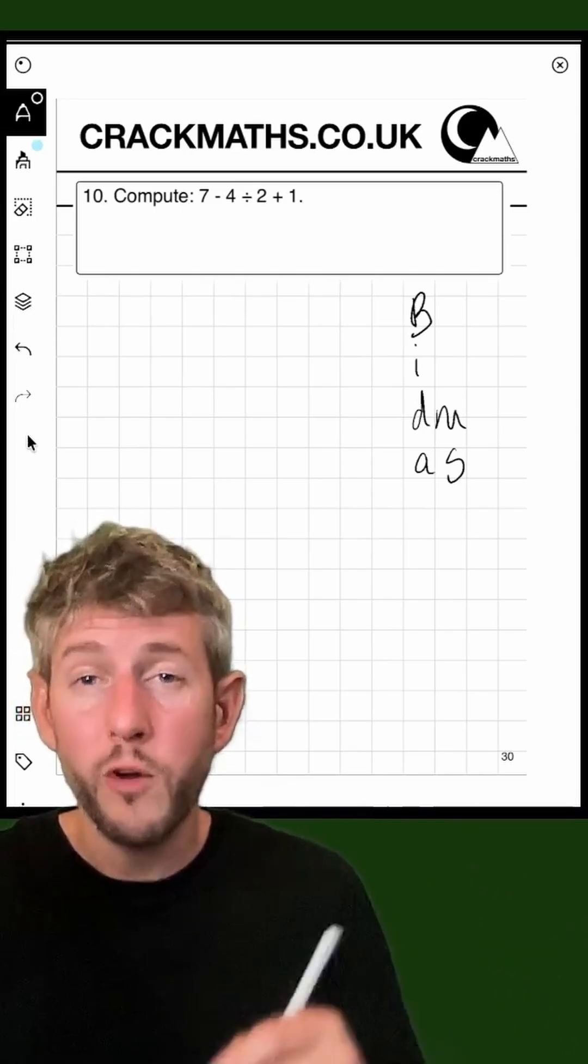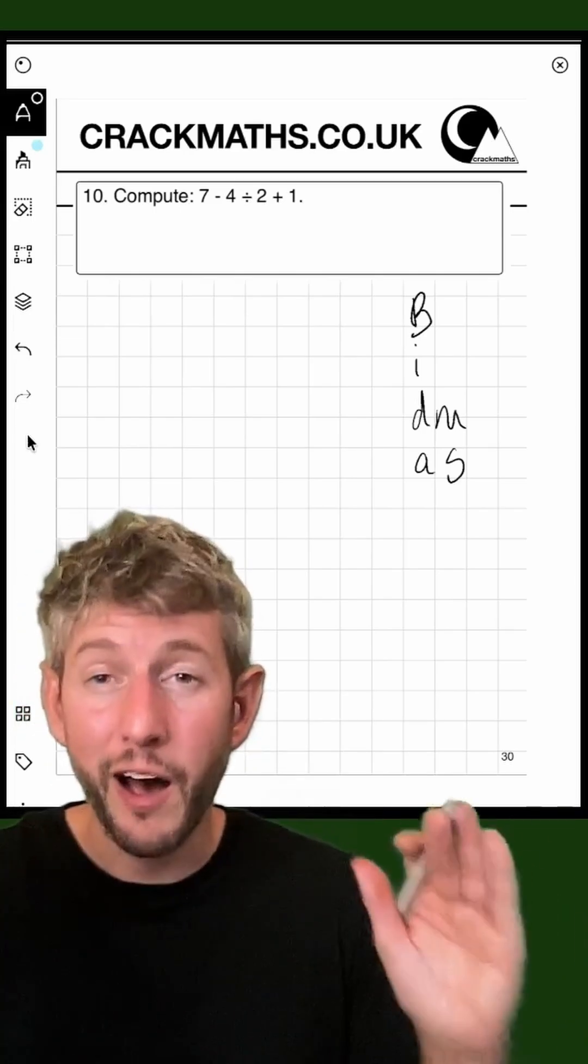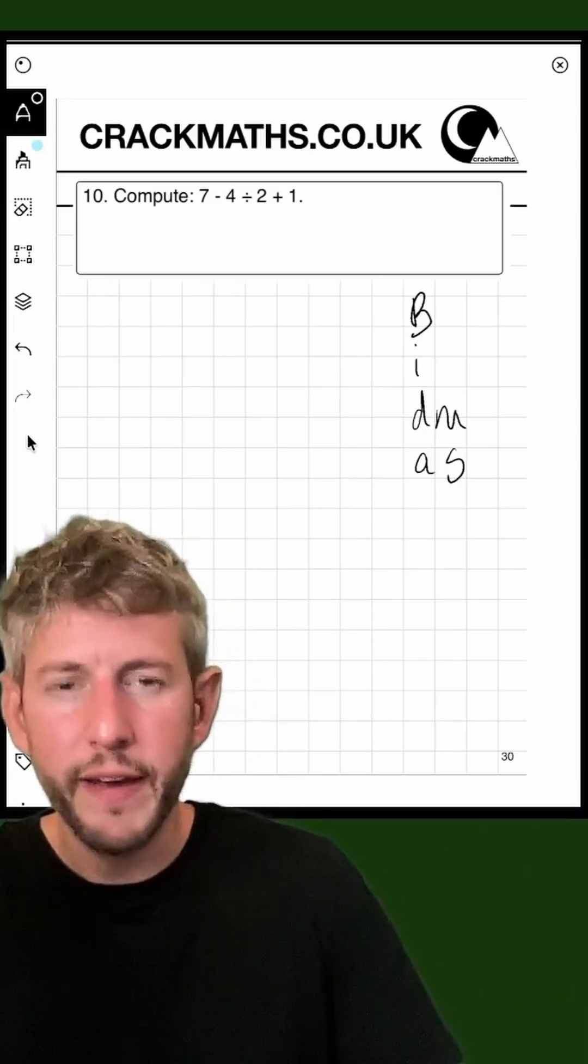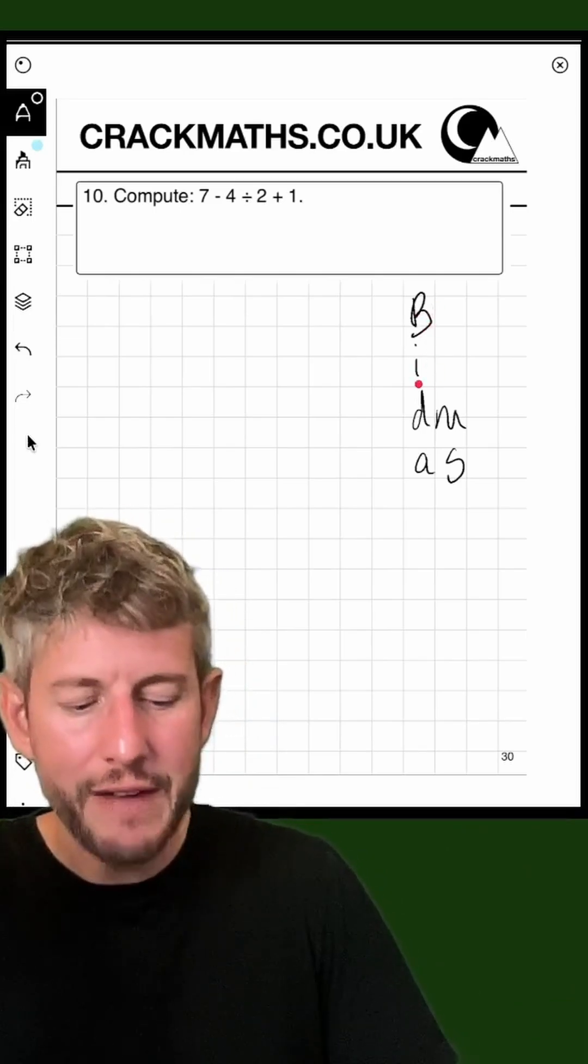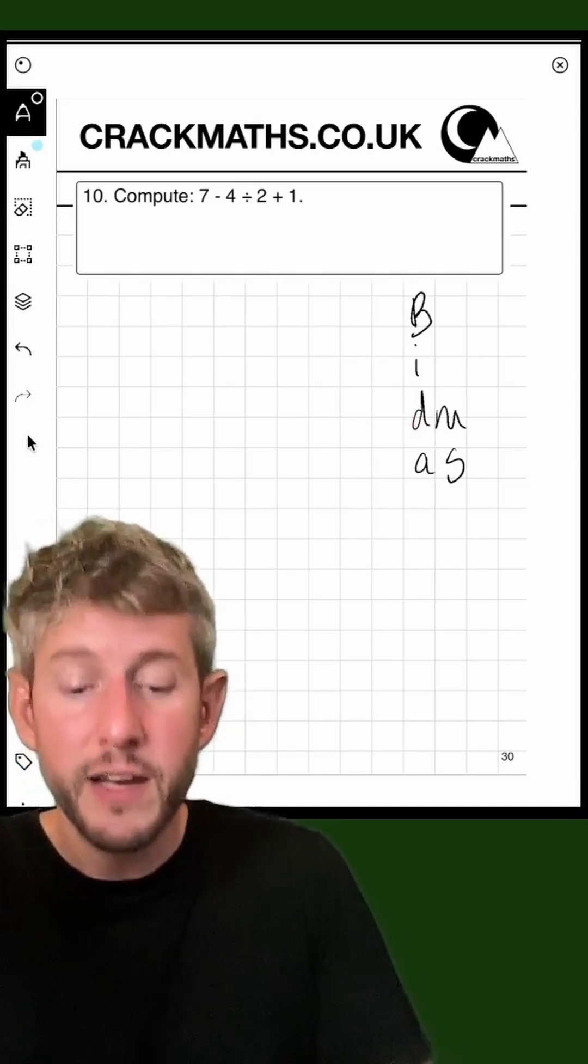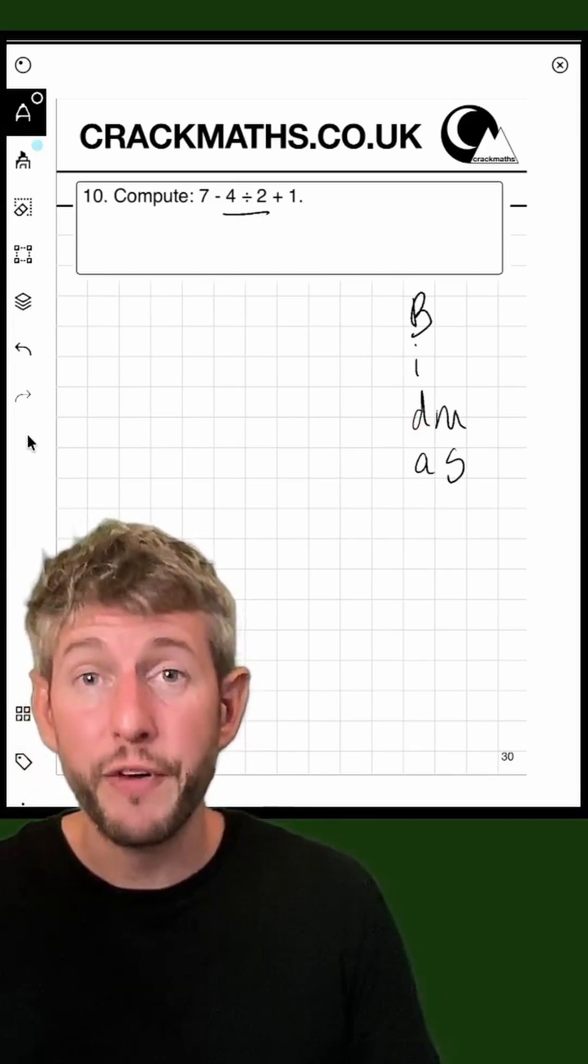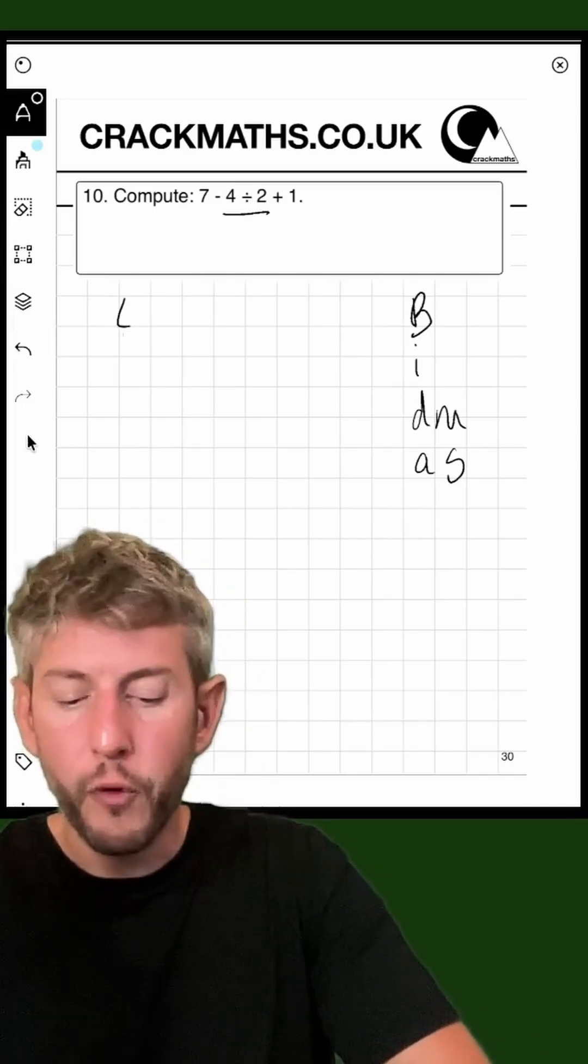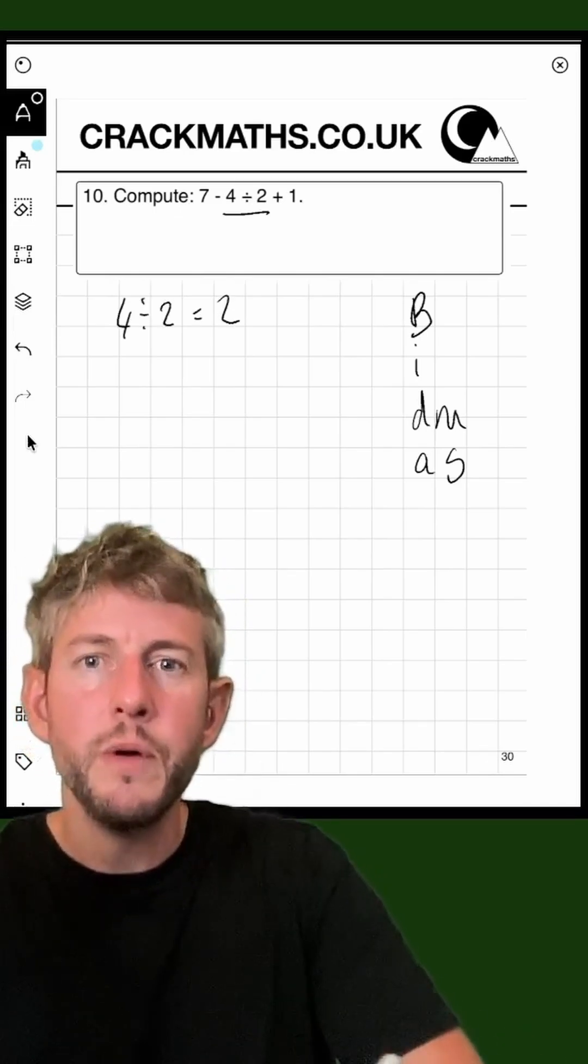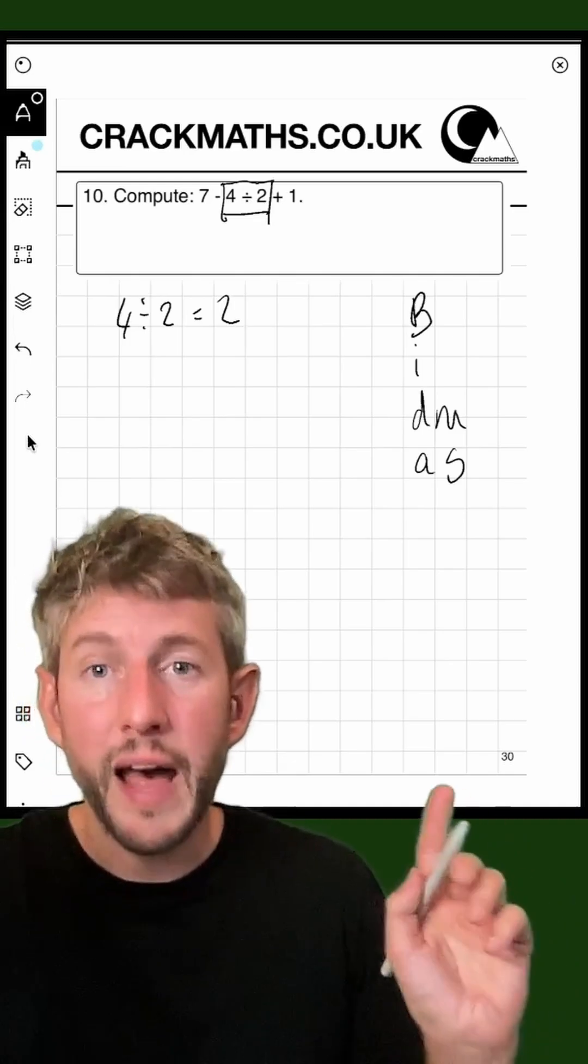This tells us the order in which we do things, no matter which way they are written. If we have a look here, we don't have any brackets, we don't have any indices, but we do have a divide. This division of four divided by two is what we have to do first. Four divided by two equals two.